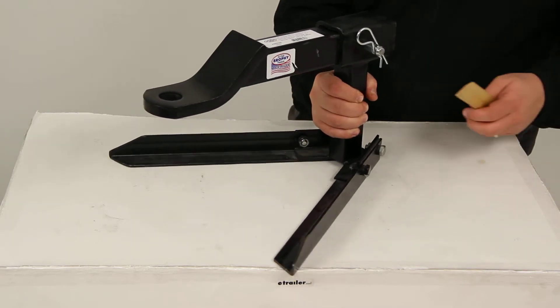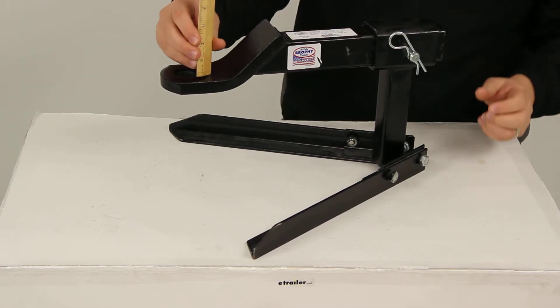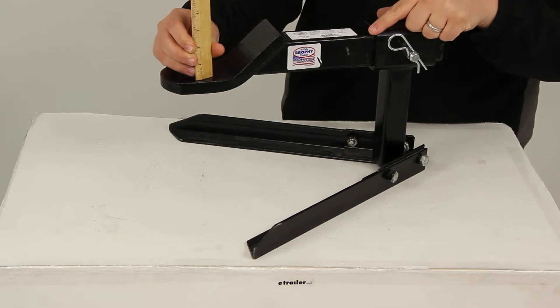Now with the ball mount in this position, this is installed in the drop position. If we measure from the ball platform to the inside top edge of our receiver tube, it is going to give us a drop of 2 inches.